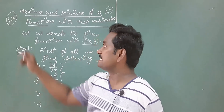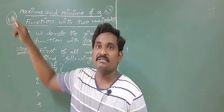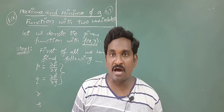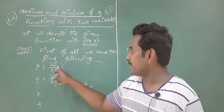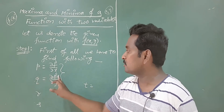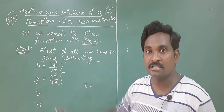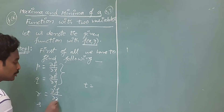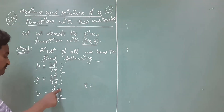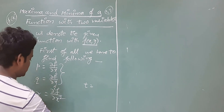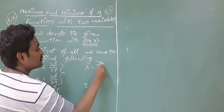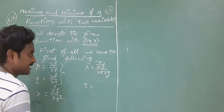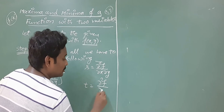Since two variables are involved, only partial derivatives exist here. If the given function had only a single independent variable x, we could take ordinary derivatives. But whenever more than one independent variable is involved, we must use partial derivatives. ∂f/∂x is always represented with p and ∂f/∂y is always represented with q — do not forget these notations. Next, r is nothing but ∂²f/∂x², the second order partial derivative with respect to x. S is ∂²f/∂x∂y, and t is ∂²f/∂y².